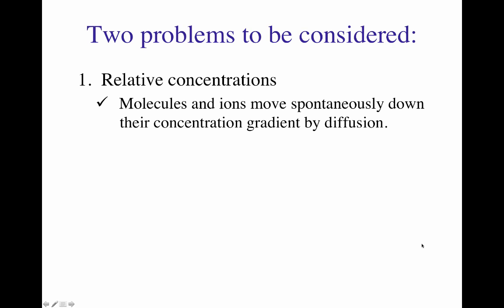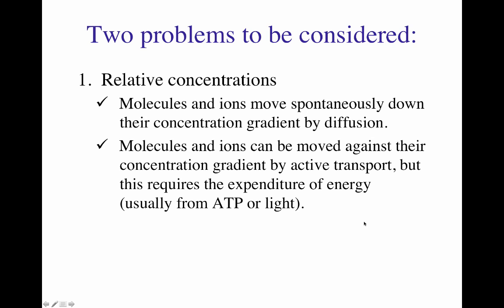What are the problems we need to consider when bringing molecules inside the cell? Number one is the issue of relative concentrations. Molecules and ions move spontaneously down their concentration gradient by diffusion, but the membrane is a barrier that prevents those molecules from moving through diffusion inside the cell. Some molecules and ions can also move against their concentration gradient when actively transported, but active transport requires energy — provided by light, ATP, or the gradient of one solute used to power the uptake of another molecule.